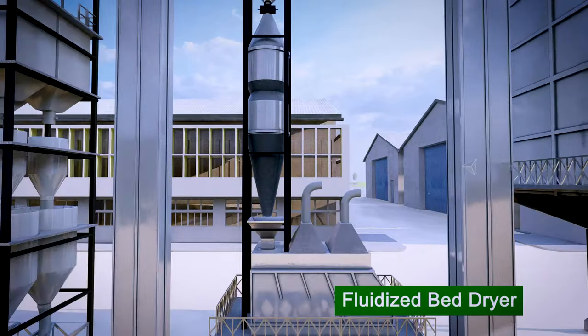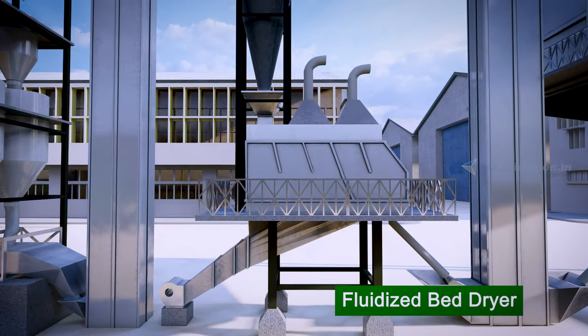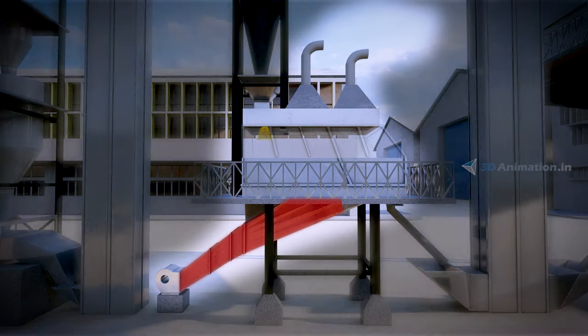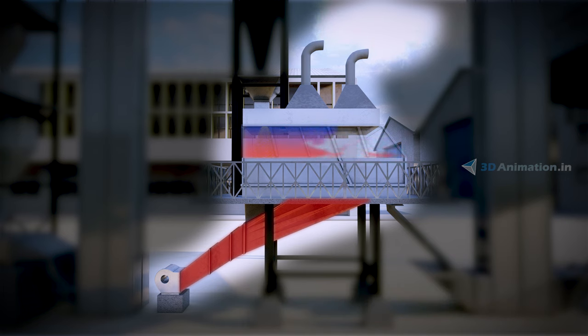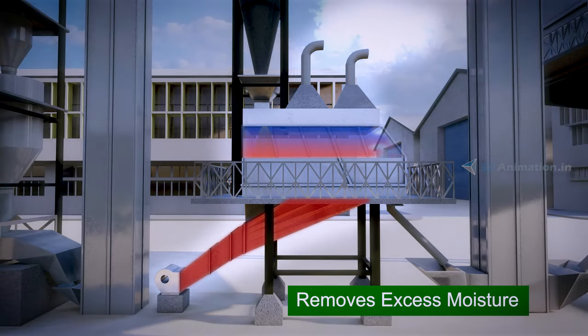The fluidized bed dryer is used to remove water residue and moisture from soaked paddy. Made up of a blower and fluidization chamber, the air blown will pass through the wet paddy as well as fluidize and move the paddy, removing excess moisture.